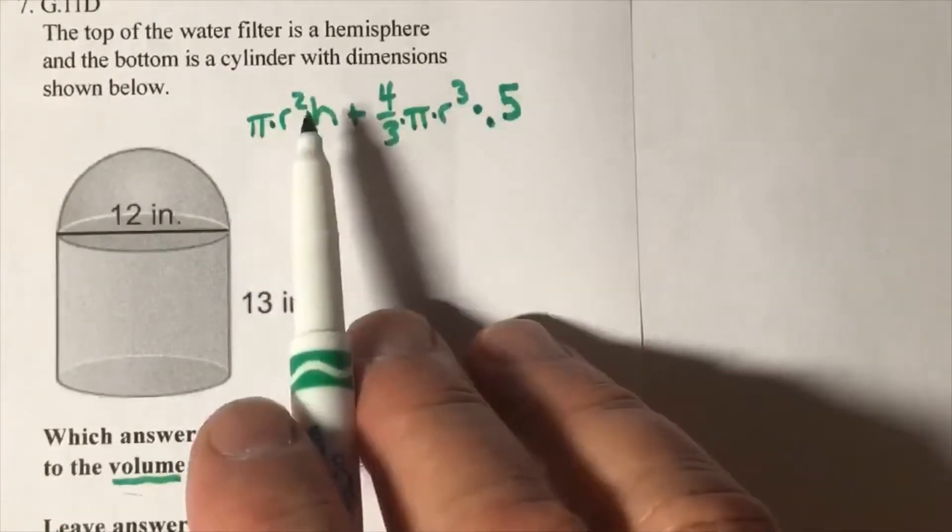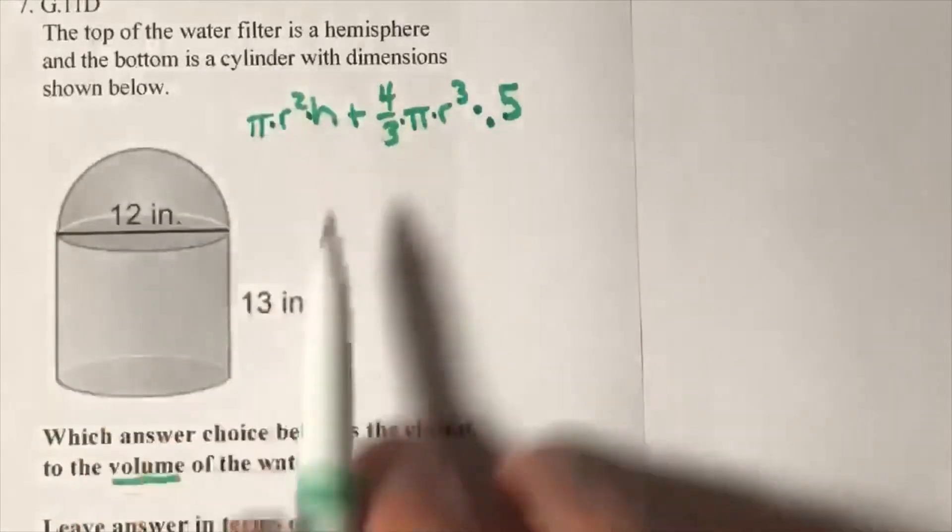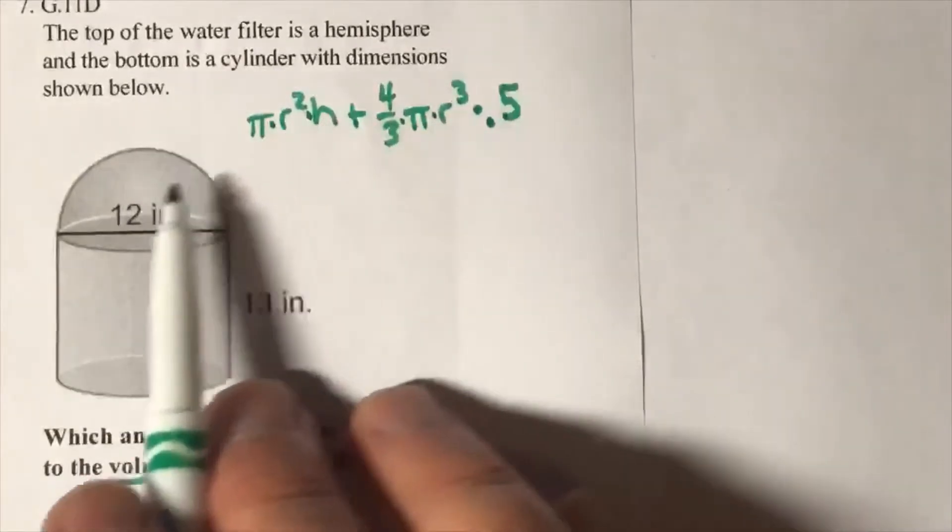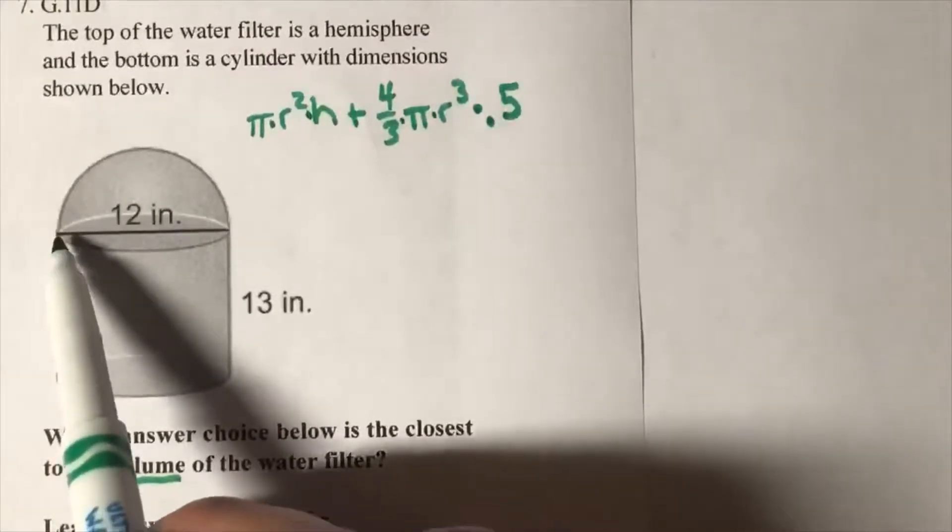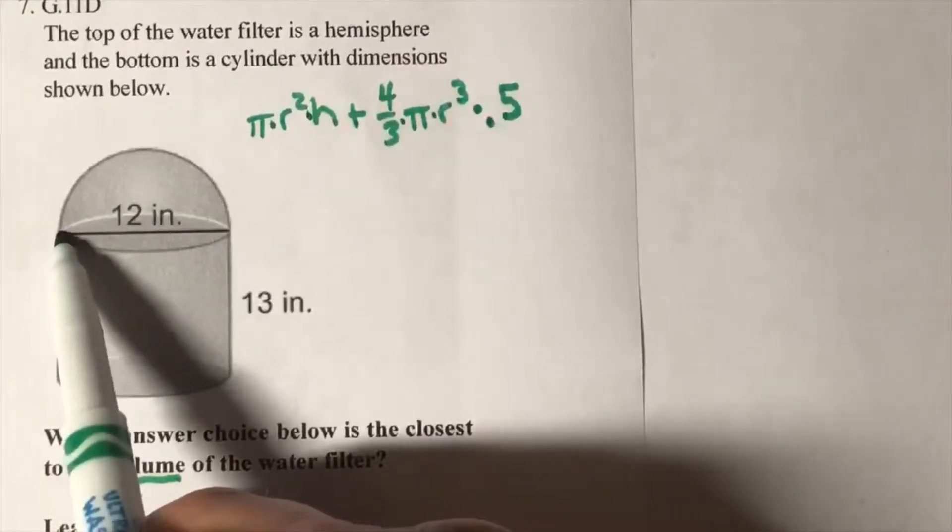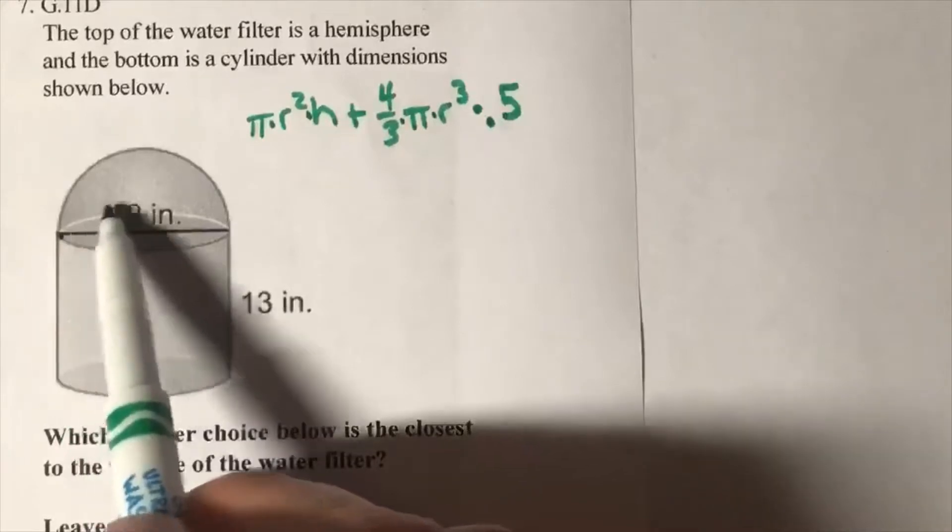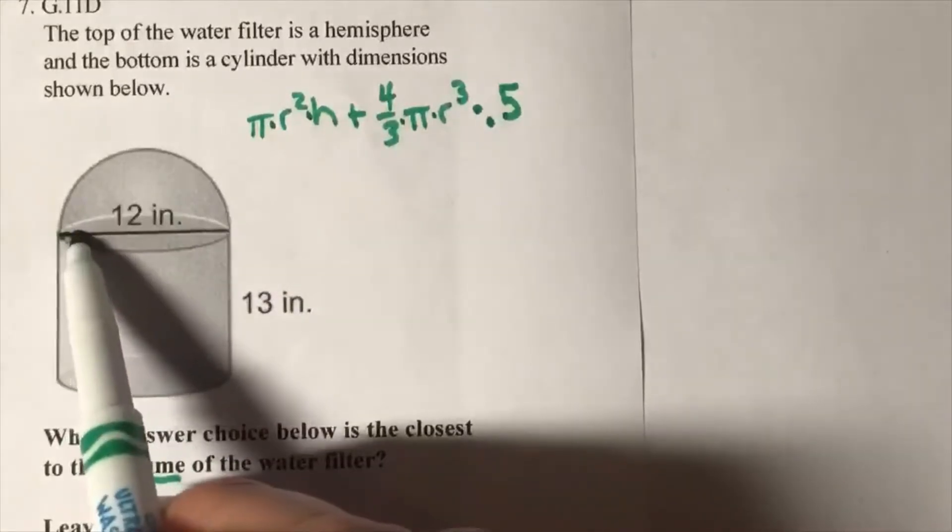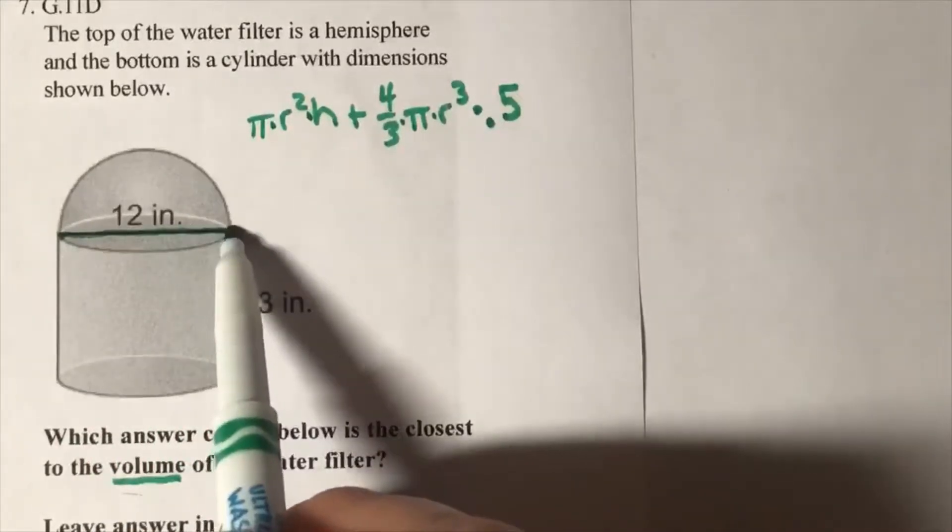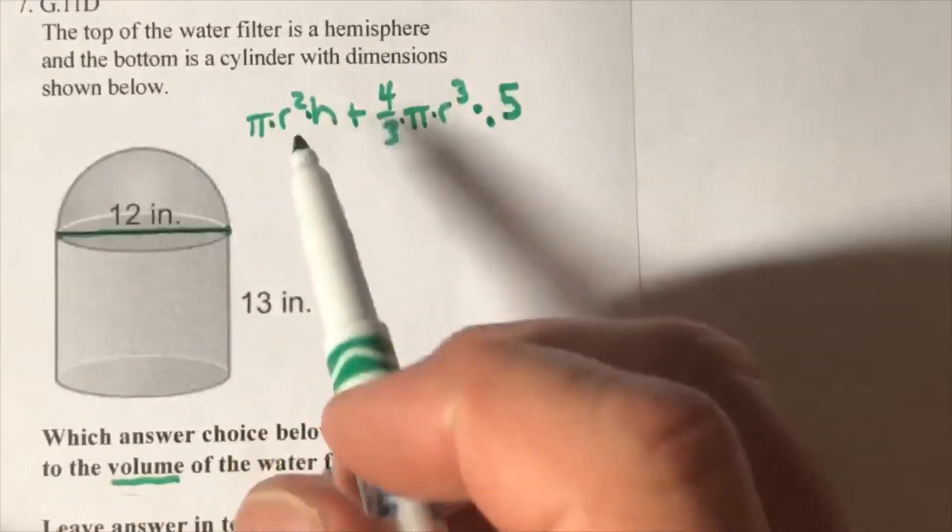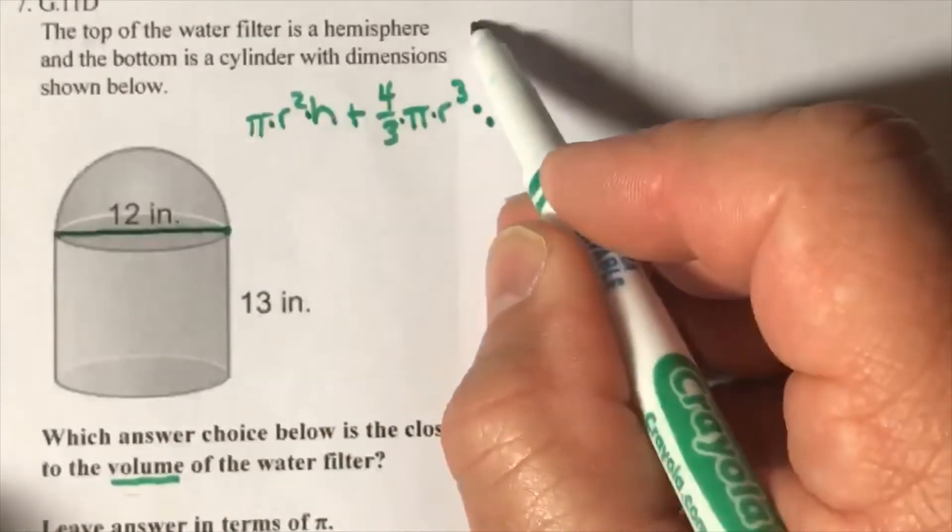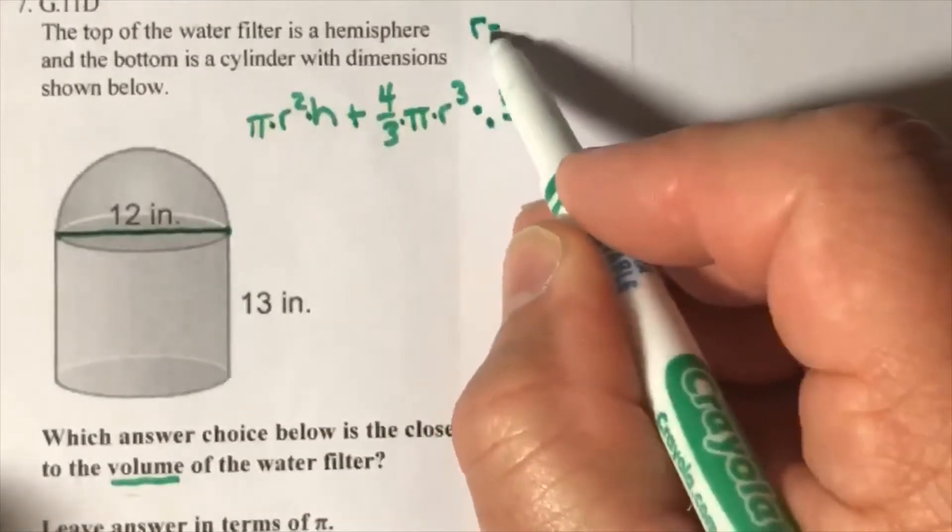Now we need the radius. We look over here, there's nothing in the reading about radius. We have to go to the diagram and we see that there's a line segment here from the center, from a point on the circle of the cylinder all the way across. That is 12, the diameter. Got to find the radius. The radius is half of 12, that's going to equal 6.